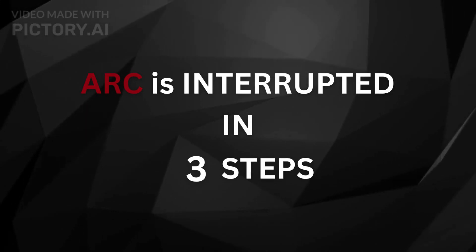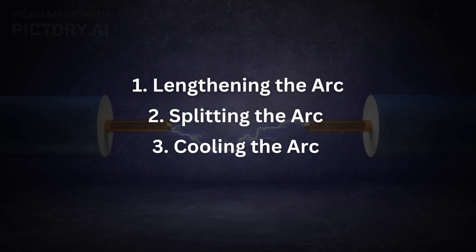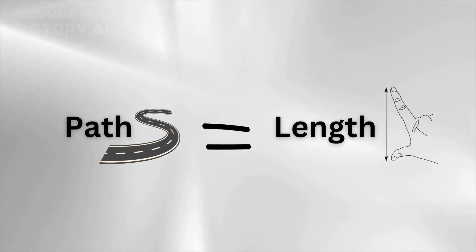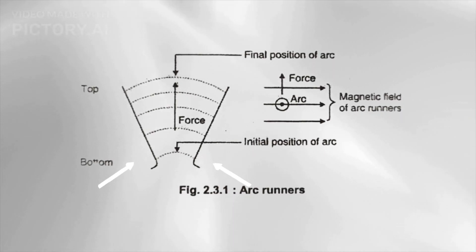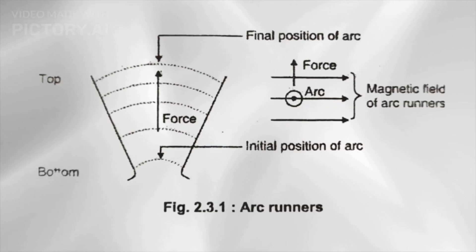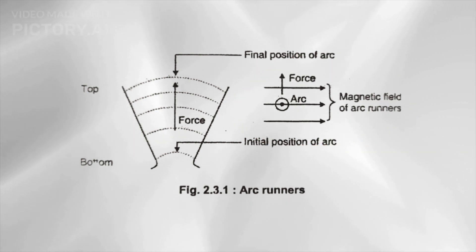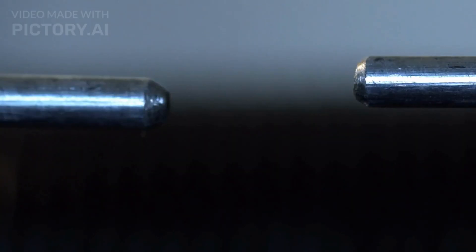In this method of arc interruption, we use three steps: lengthening the arc, splitting the arc, and cooling the arc. Step 1 — Lengthening the arc: The length of the arc can be increased by making it flow through a longer path. This is achieved by using arc runners, which are V-shaped blades made of conducting material. The arc strikes near the bottom portion of these blades. Due to the magnetic field created by the arc runners, the arc becomes a conductor placed in a magnetic field, and a force is produced on the arc in the upward direction, thanks to Fleming's left-hand rule. As the arc travels upwards, its length increases, resistance increases, current decreases, and the arc can be interrupted.